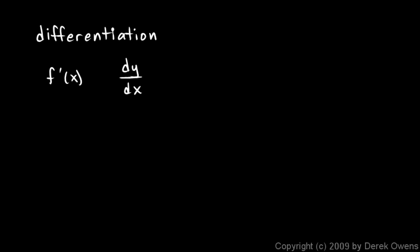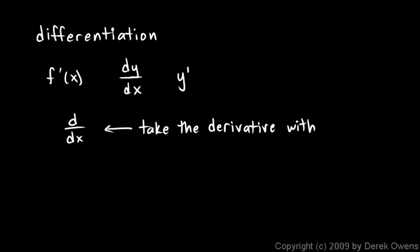Now we've seen some of this notation before. Instead of the f prime notation, we often see dy over dx. So if y is a function of x, then dy over dx is the same thing as y prime, the derivative of the function. You can think of d/dx as the operator — that means take the derivative of the function. Specifically, we say the derivative with respect to x, meaning x is the independent variable, the input value for the function.